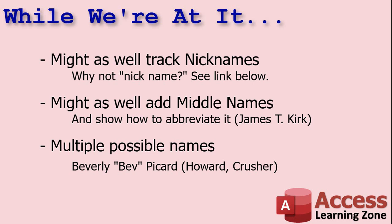I'll also show you how to abbreviate the middle name — like James T. Kirk. You might also have multiple other names if a person's been married a few times, and you want to track all of them. For example, Beverly — nickname Bev — Picard as a married name in an alternate future, Howard as her birth name, and Crusher from her marriage to Jack Crusher. So you've got nickname, legal last name, and other last names the person has had in the past.